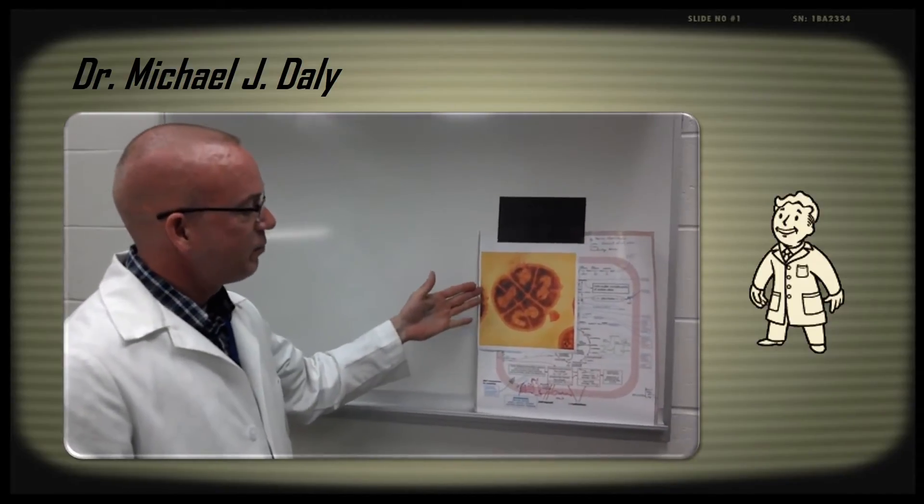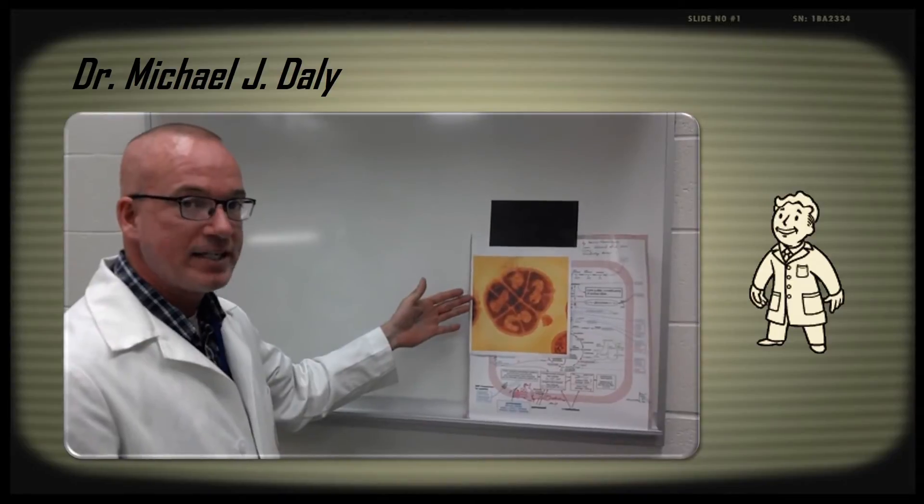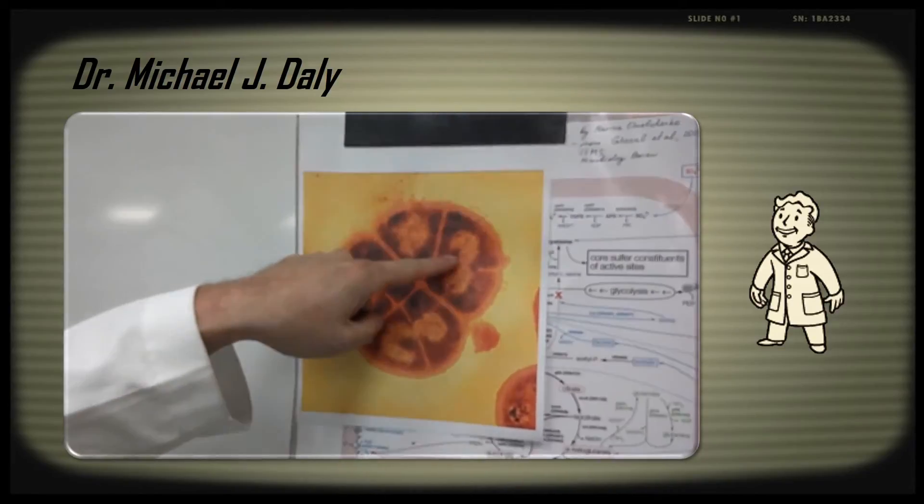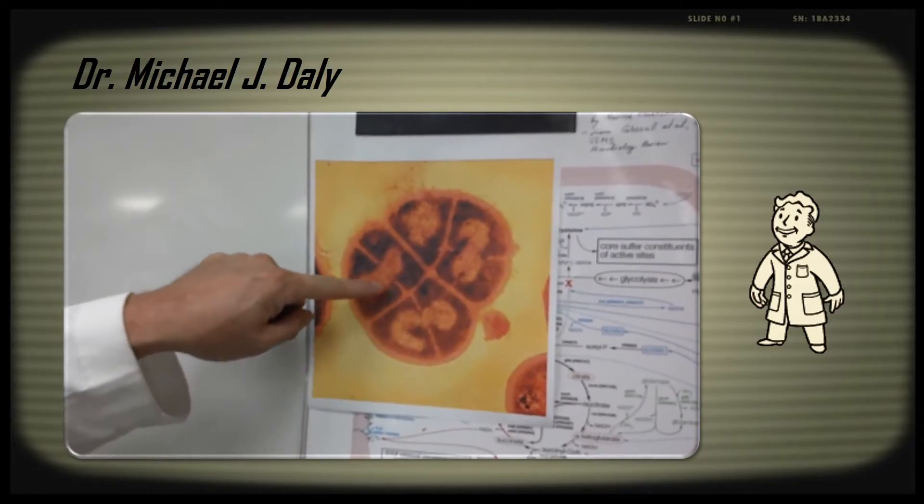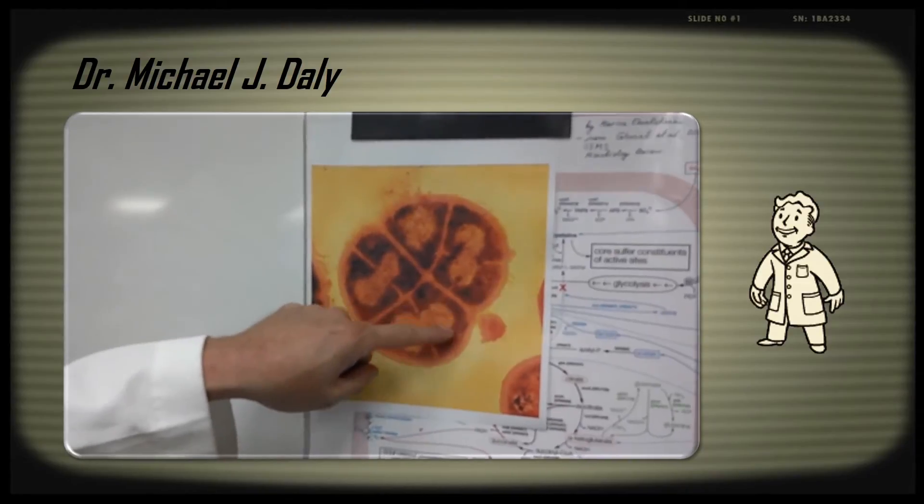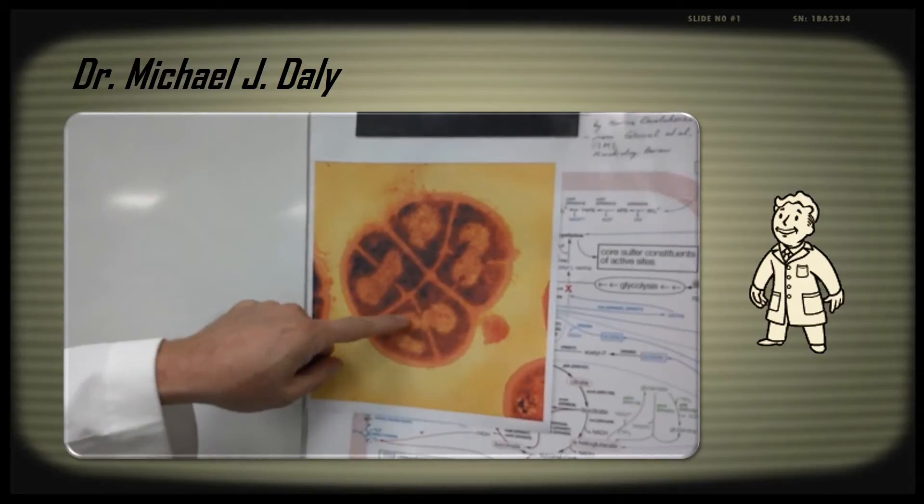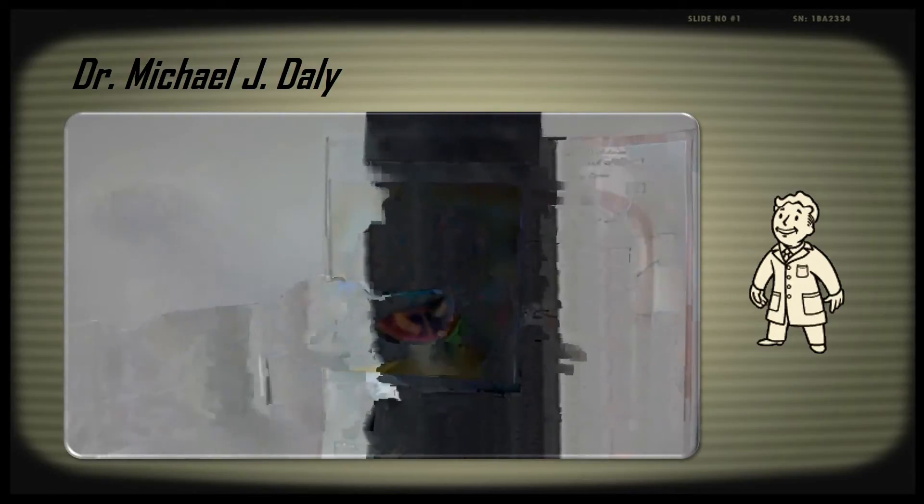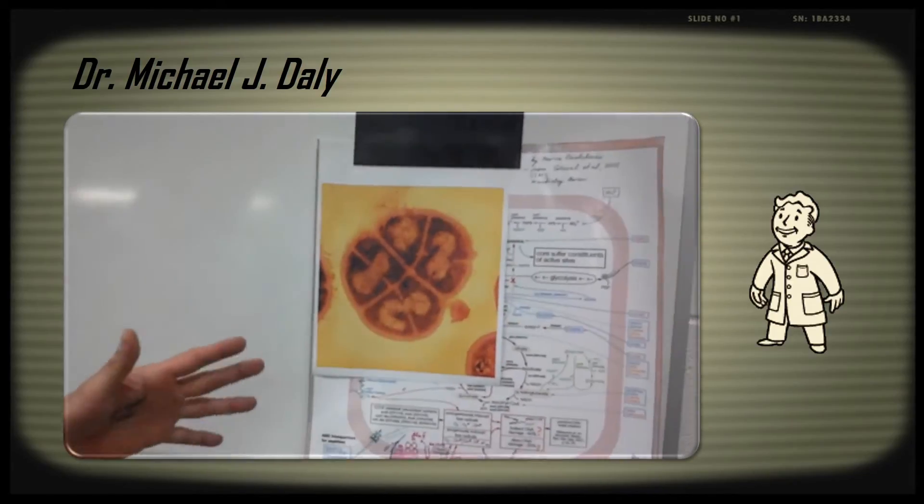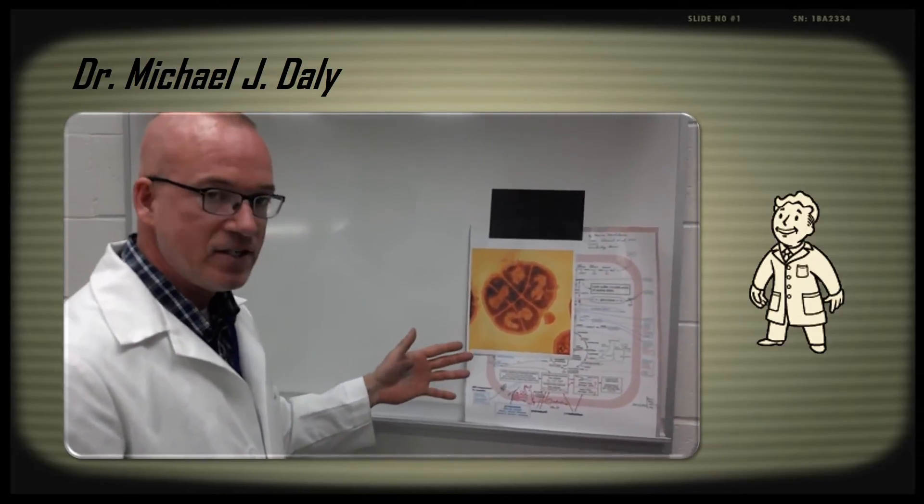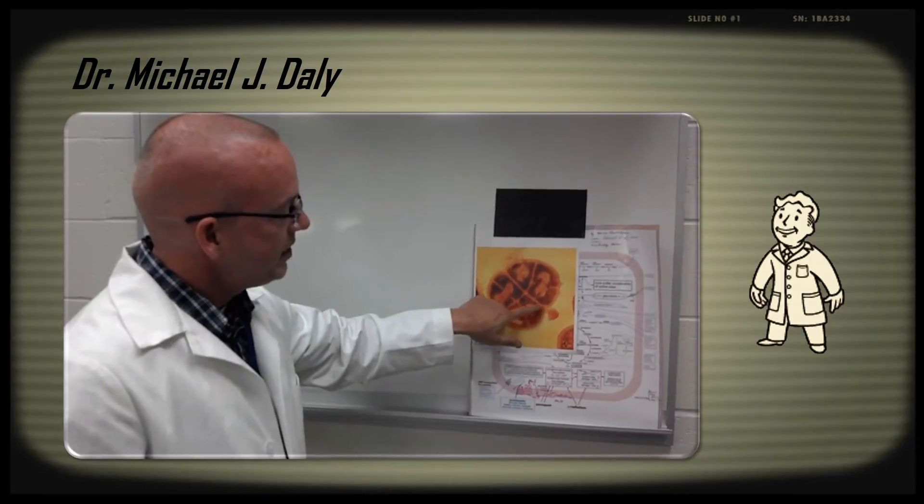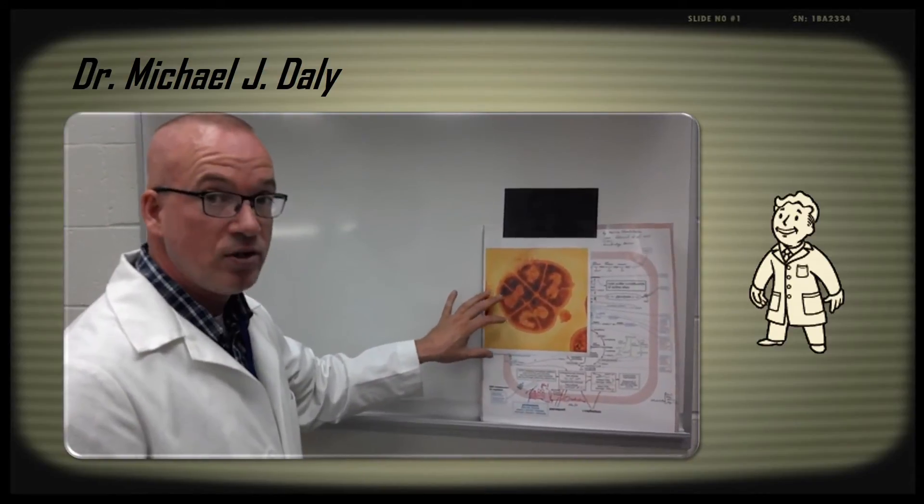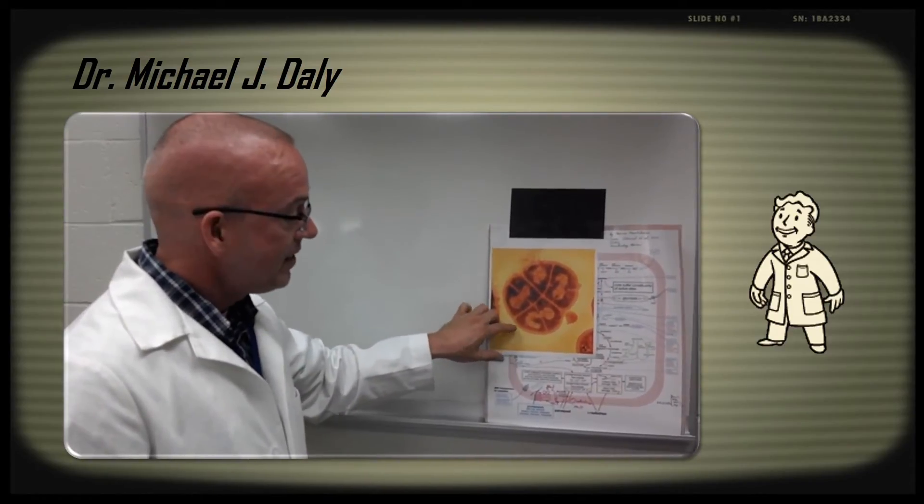All right, so this is a picture of Deinococcus radiodurans, the bacteria which is very radiation-resistant. And what you see here is a cluster of four cells. These light-staining regions are the genomes, that's where the DNA is, and here the genome is dividing. And surrounding these genomes is something called the cytoplasm, and the cytoplasm is where all the machines of a cell are, all the proteins, all the enzymes, and mixed in with all these proteins in Deinococcus are manganese complexes.